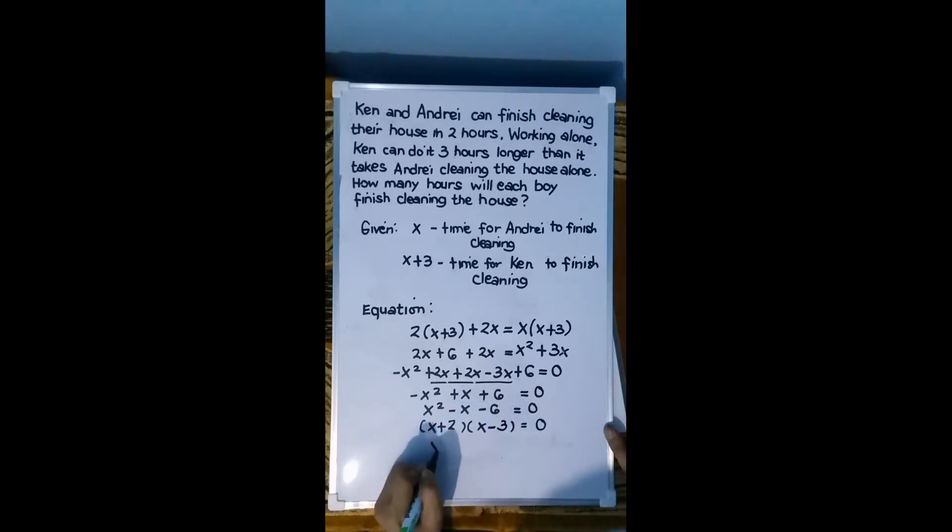So we have (X+2) equals 0 and (X-3) equals 0. X equals negative 2, then X equals positive 3.